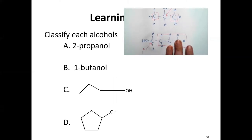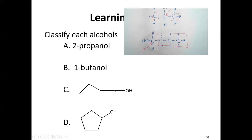For example C, counting all carbons: one, two, three, four — this is a butanol, technically a 1,1-dimethyl-1-butanol. Focusing solely on the carbon with the OH: there are three carbon-based groups attached — one, one, and one more carbon. This is a tertiary molecule. All three available bonds on that carbon go to carbon groups: tertiary.